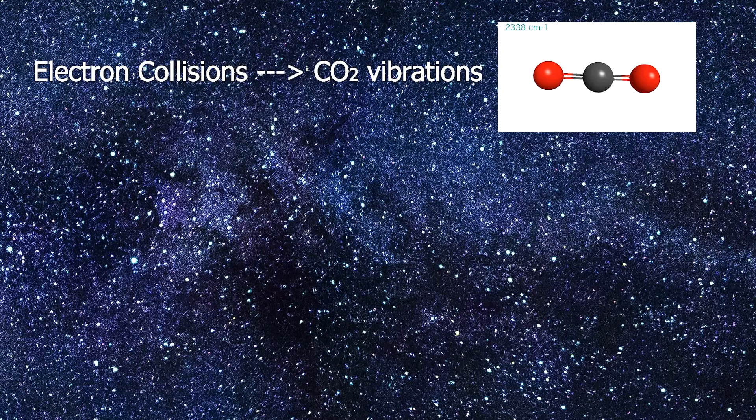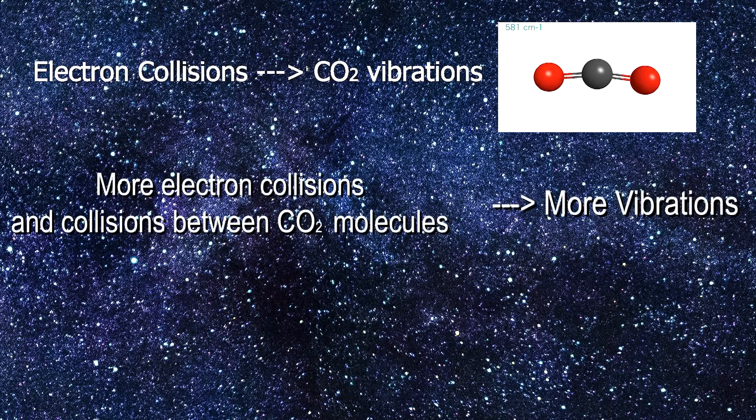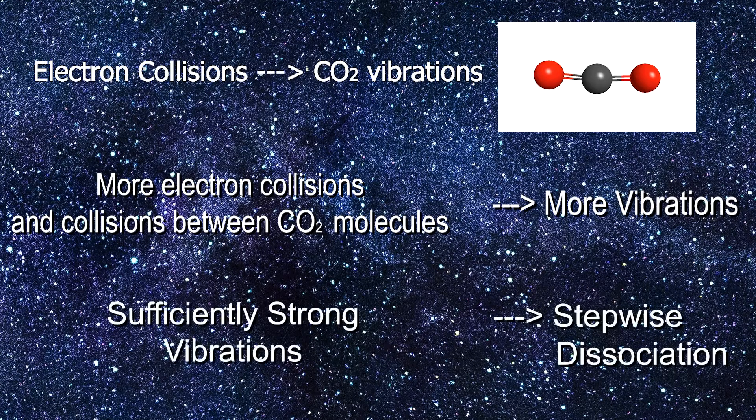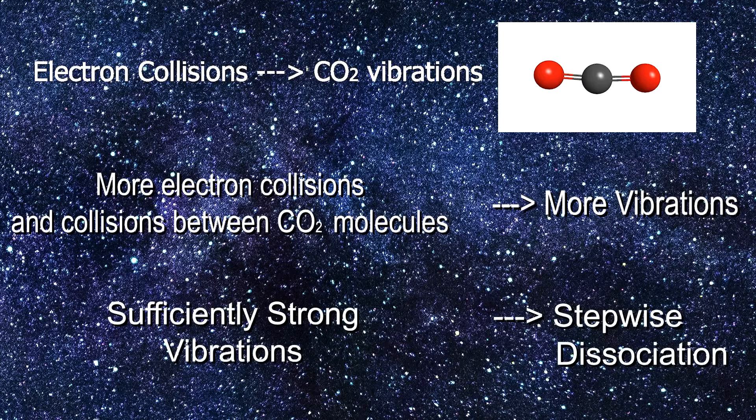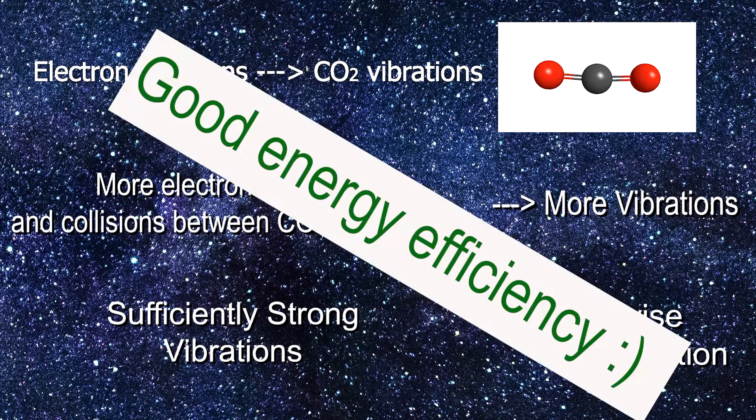When the electrons collide with CO2 molecules, they can also make them vibrate. The more collisions the molecules suffer, the more they vibrate. If the vibrations are sufficiently strong, the CO2 can even break. In this way, the CO2 can gain energy step by step till it reaches dissociation.